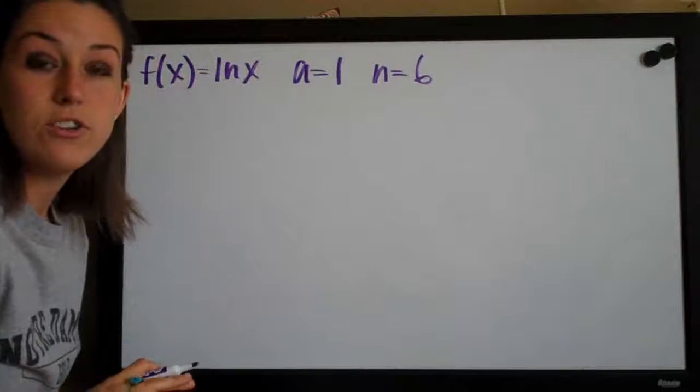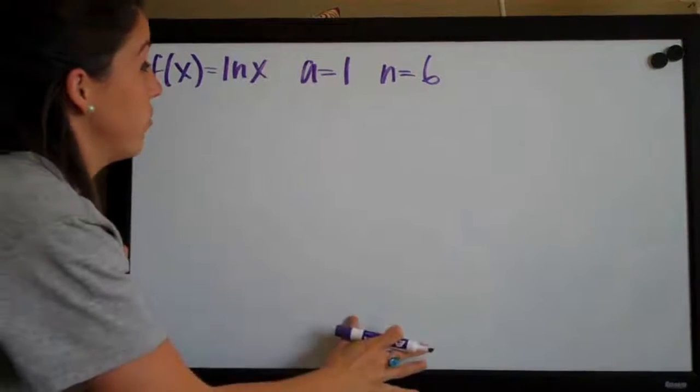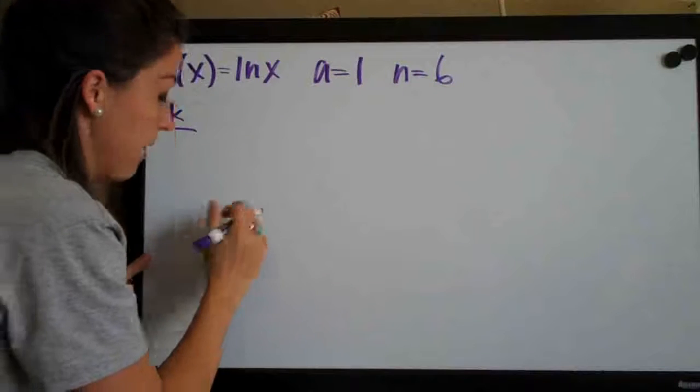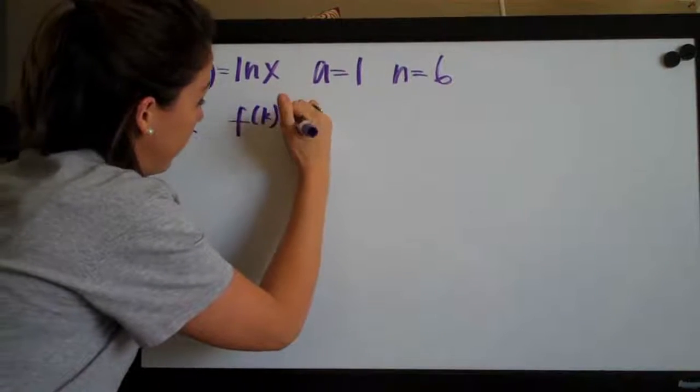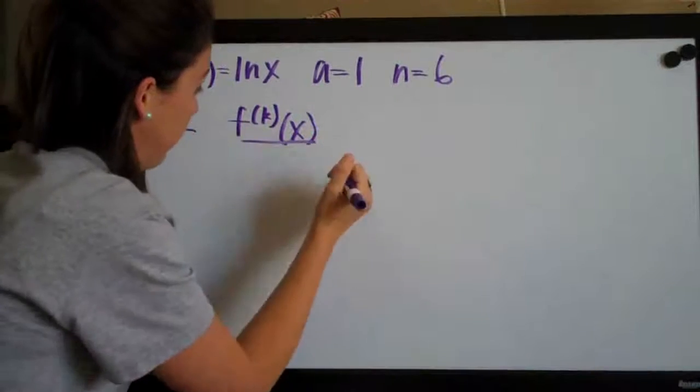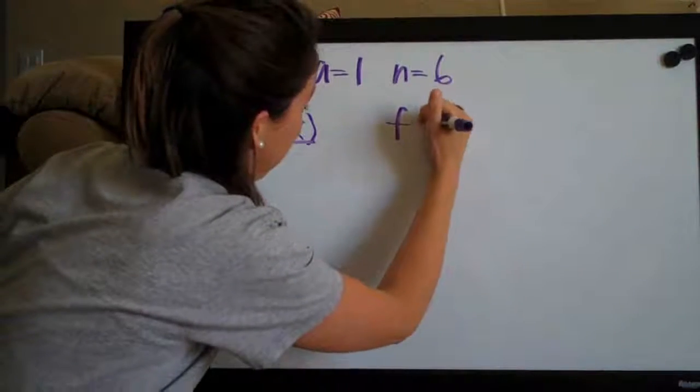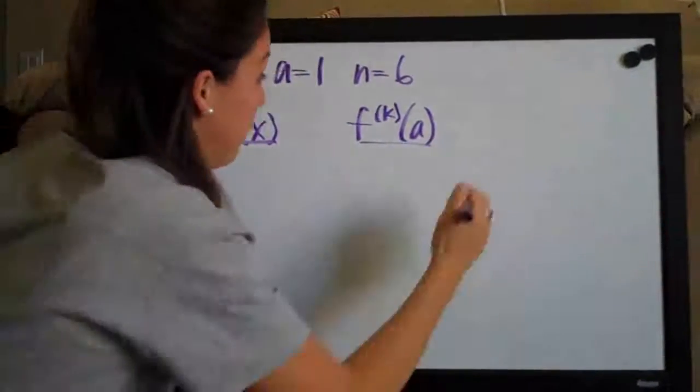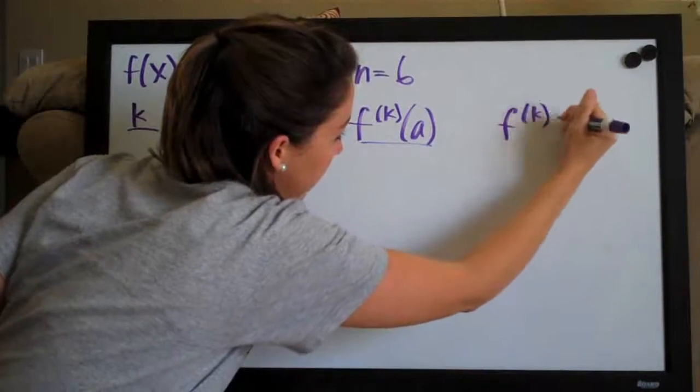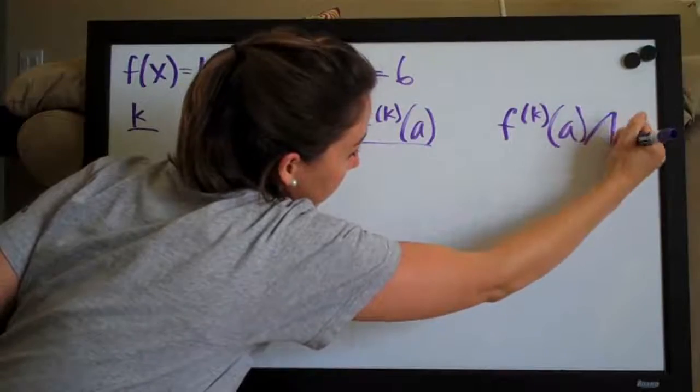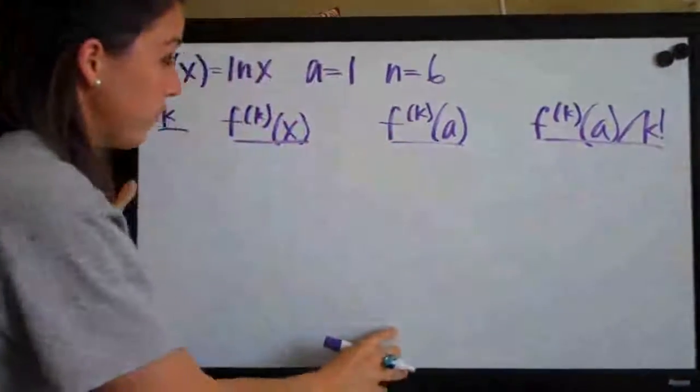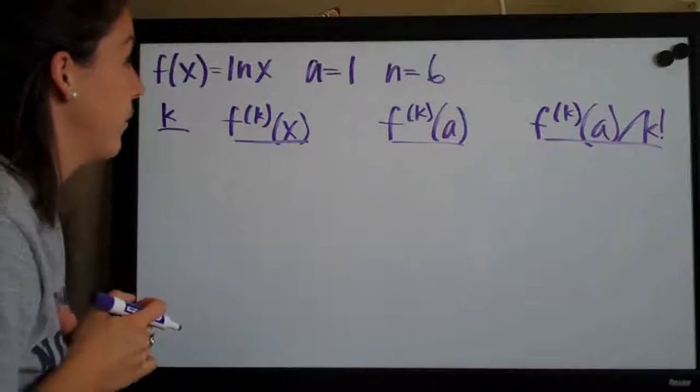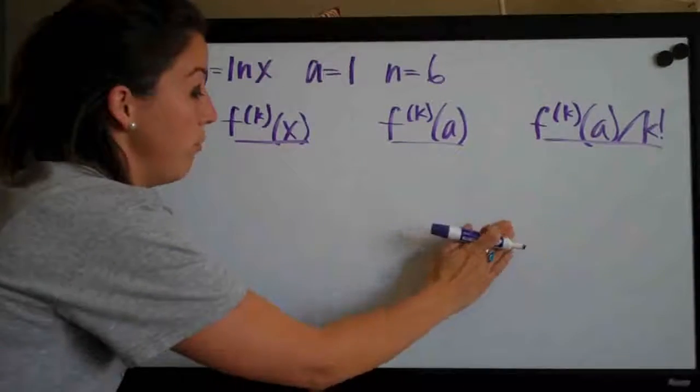So the first thing we always want to do with the Taylor polynomial problem is to start constructing the following table. It's going to be four columns. The first column is k, the second column is f^(k)(x), the third column is f^(k)(a), and the fourth column is f^(k)(a)/k!. These are our column headings. They look a little bit more complicated than they actually are and we can move through them rather quickly.